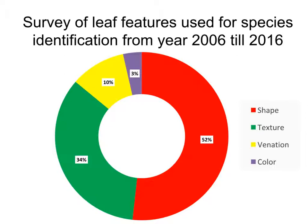Plant classification systems developed by computer vision researchers have helped botanists to recognize and identify unknown plant species more rapidly. Until now, numerous studies have focused on procedures or algorithms that maximize the use of leaf databases for plant predictive modeling. For example, from 2006 until 2016, leaf shape features have been chosen and tested in almost 52% of plant identification studies, while texture features were used in almost 35%. These features, however, are liable to change with different leaf data or feature extraction techniques.